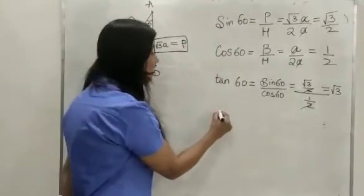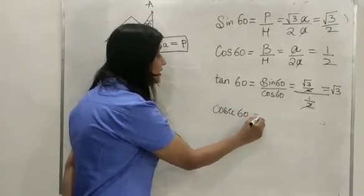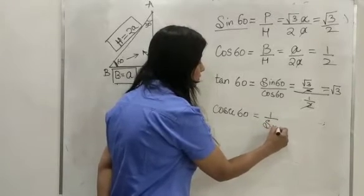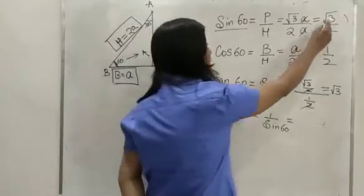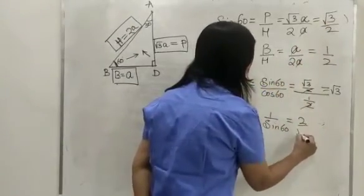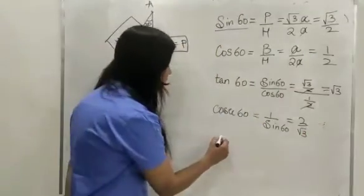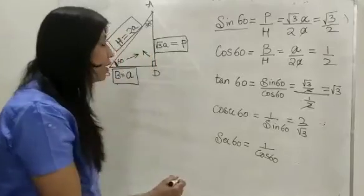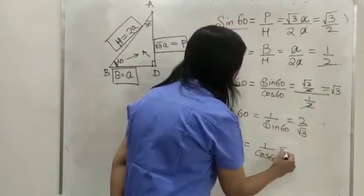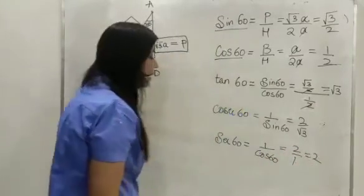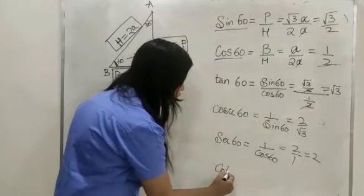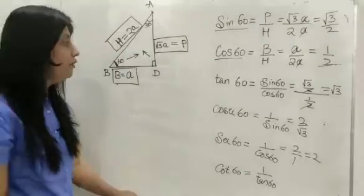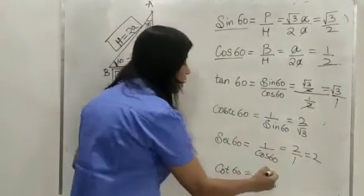Next, cosec 60 — cosec is just the reverse of sin. Since sin 60 is root 3 over 2, cosec 60 is 2 upon root 3. Then sec 60 — sec is just the reverse of cos. Since cos 60 is 1/2, sec 60 is 2. And lastly, cot 60 — cot is just the reverse of tan. Since tan 60 is root 3, cot 60 is 1 upon root 3.